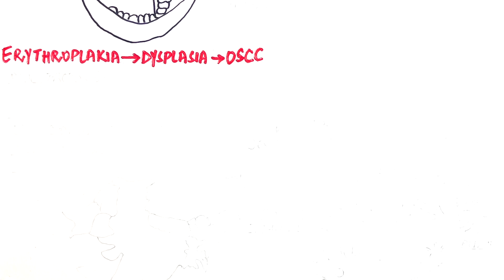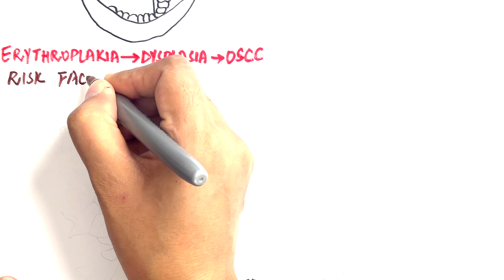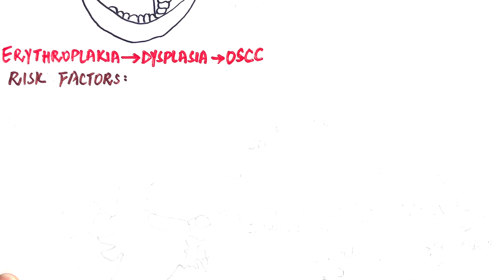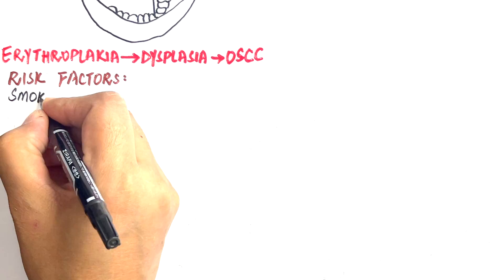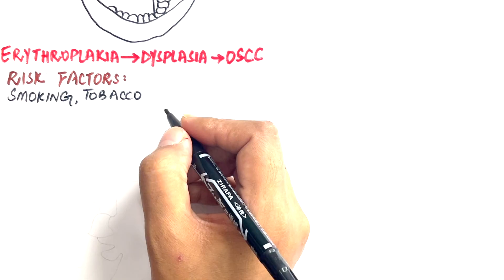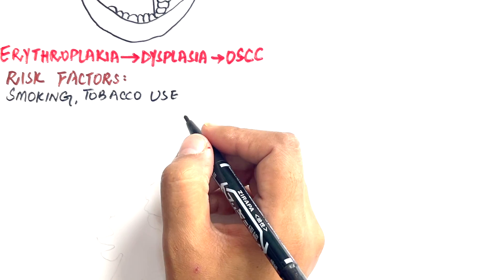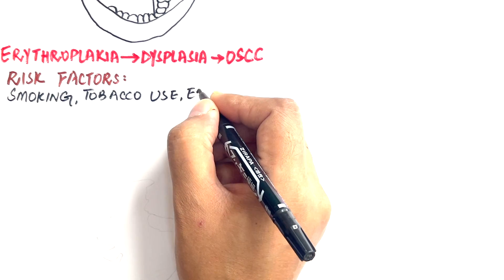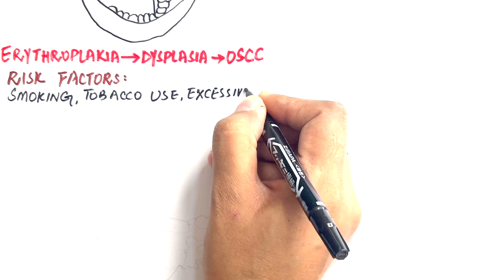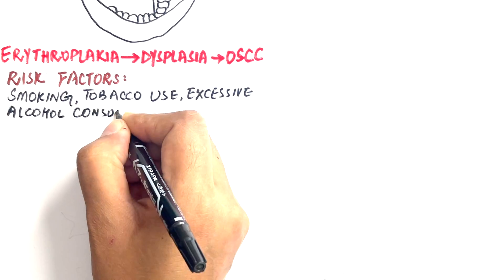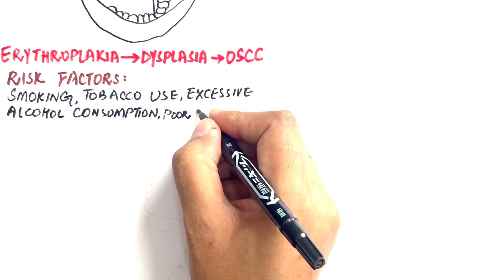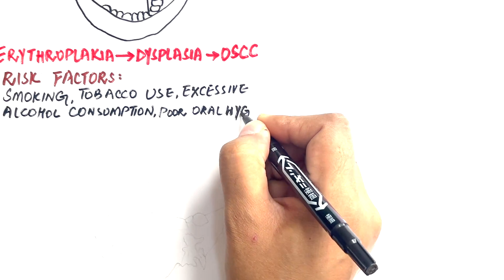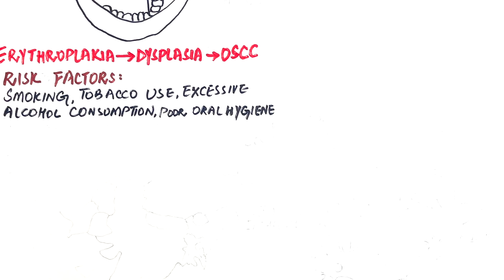While the exact cause of erythroplachia remains unclear, certain risk factors such as smoking, tobacco use, excessive alcohol consumption and poor oral hygiene are frequently associated with its development.